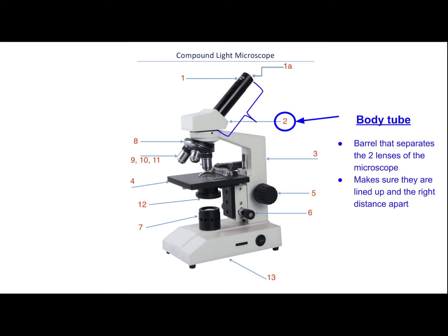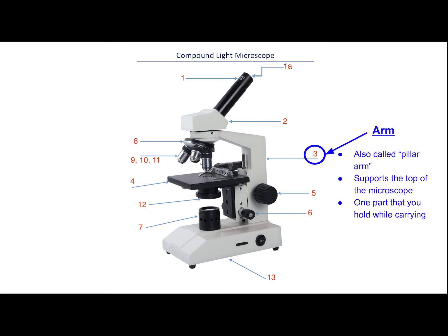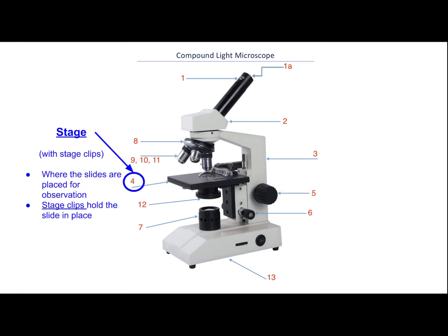The next piece is the arm — sometimes also called the pillar arm. The arm supports all of the top working parts of the microscope. This is one of the parts that you can and should hold on to while you are carrying the scope around.